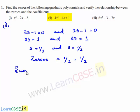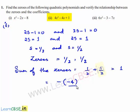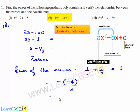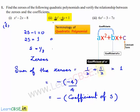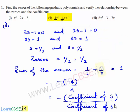Sum of the zeros is equal to 1/2 plus 1/2, which is equal to 1. So 1 can be written as minus of (minus 4) divided by 4. This is equal to minus of the coefficient of s divided by the coefficient of s². Therefore, the sum of the zeros equals minus of the coefficient of s divided by the coefficient of s².